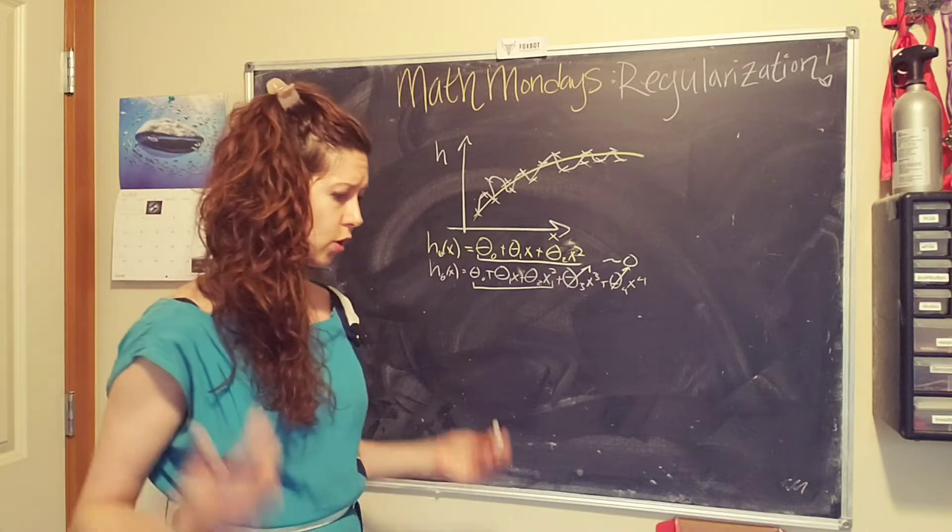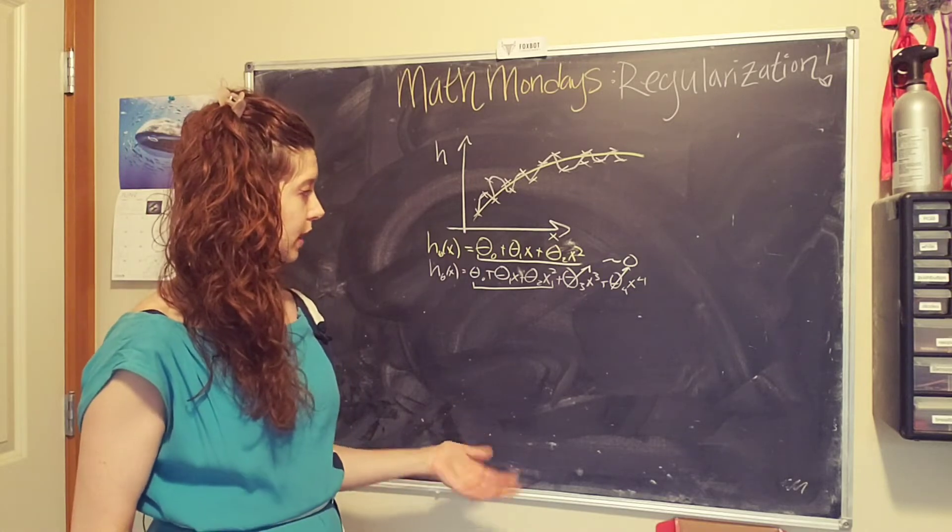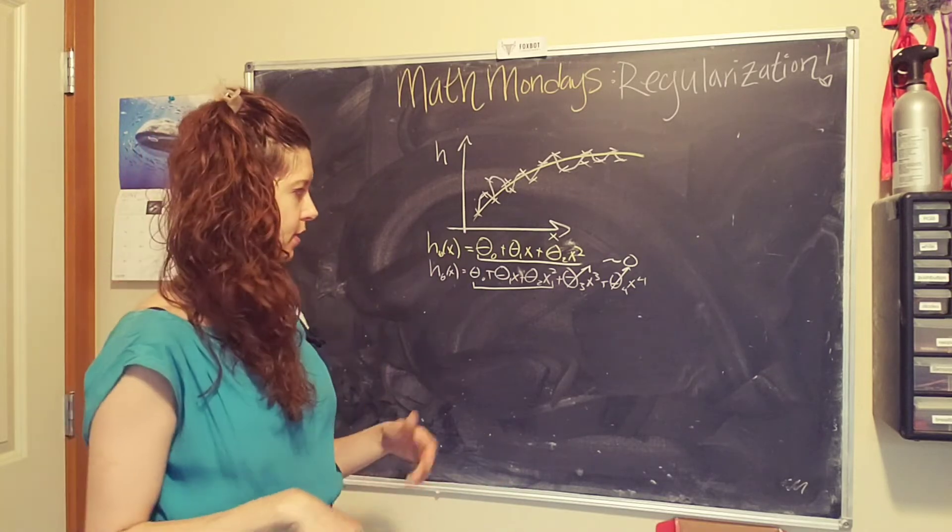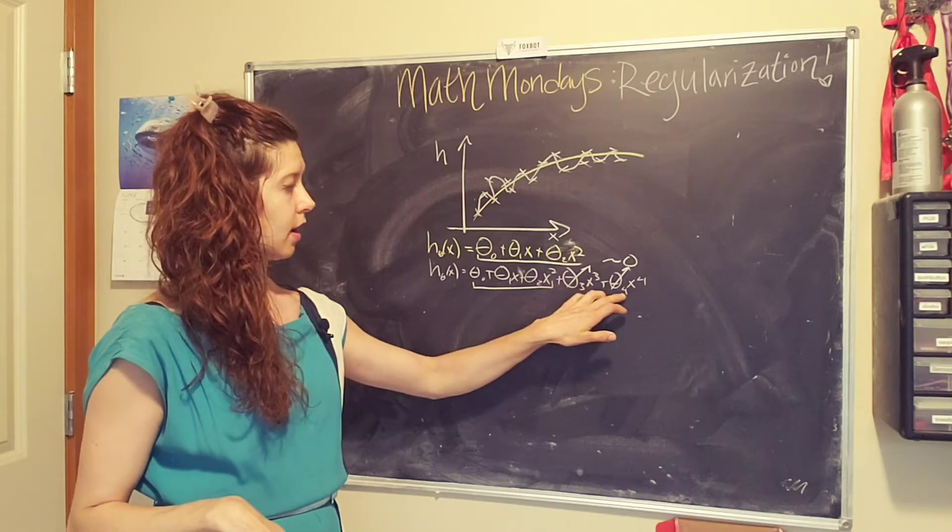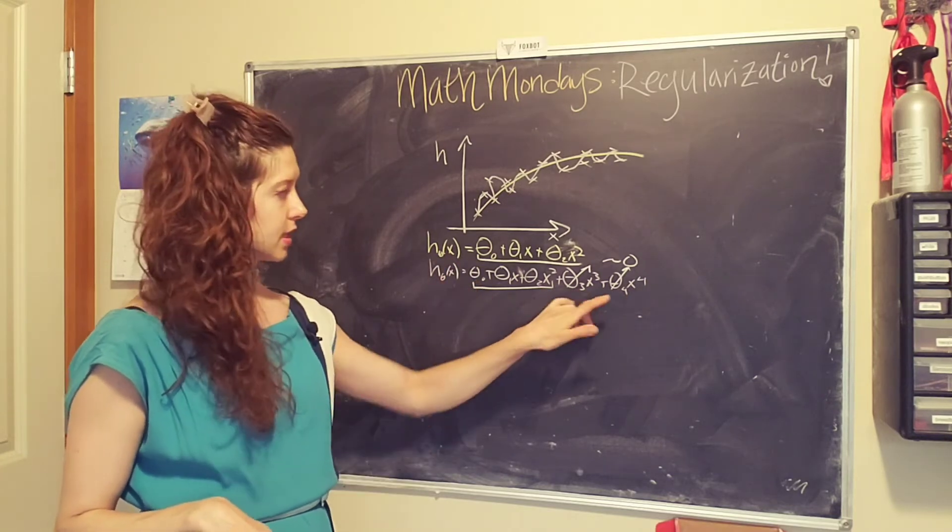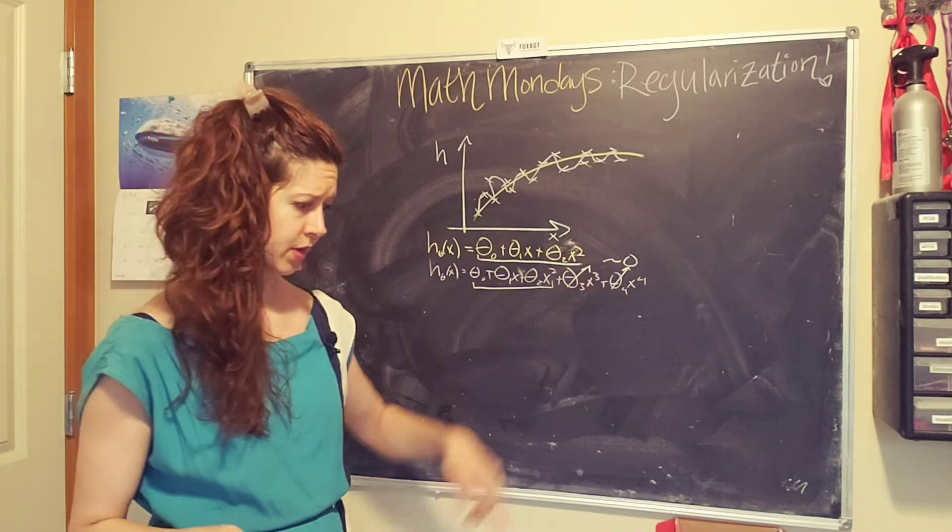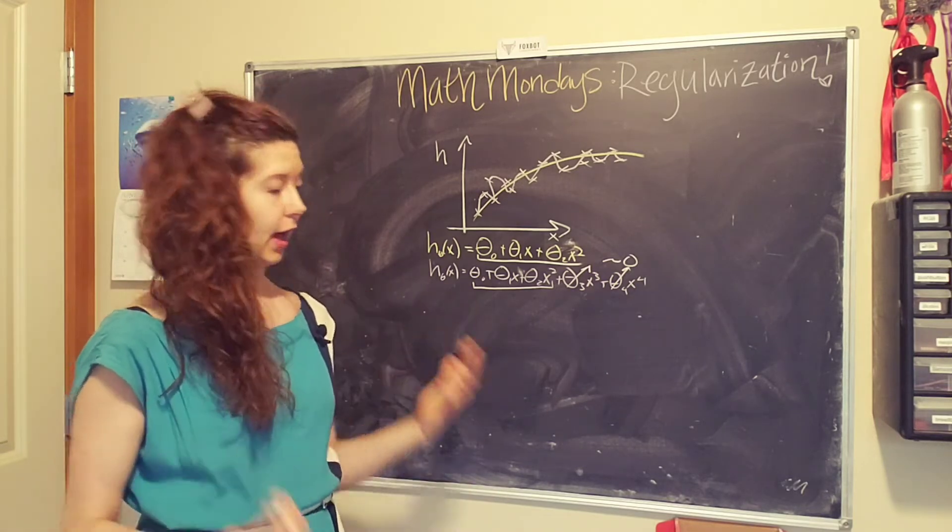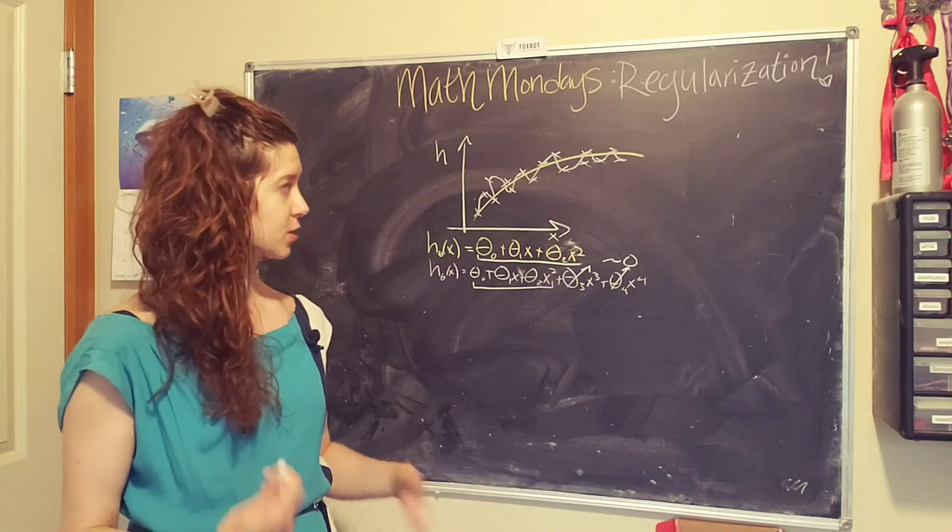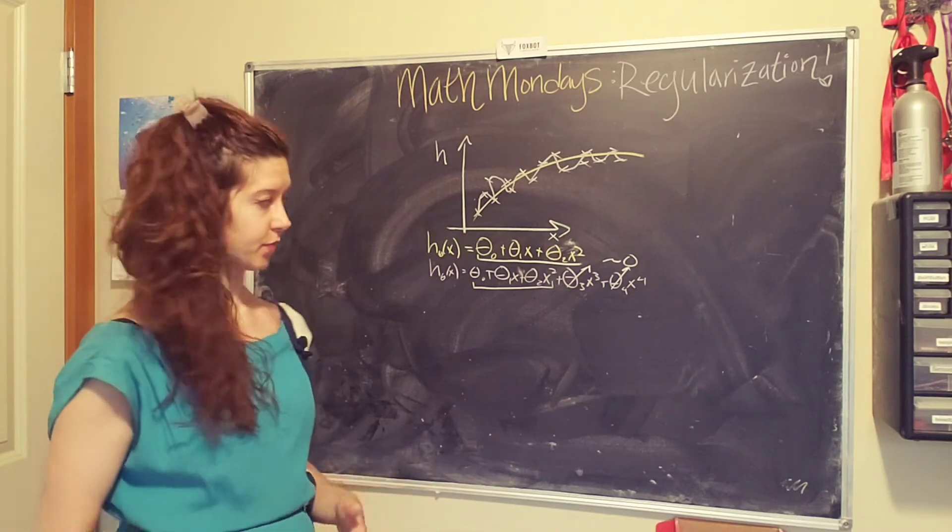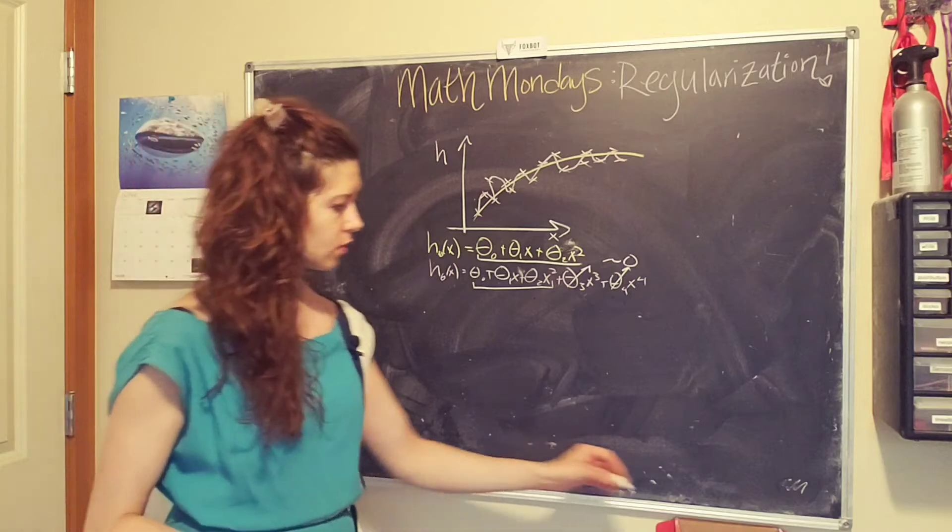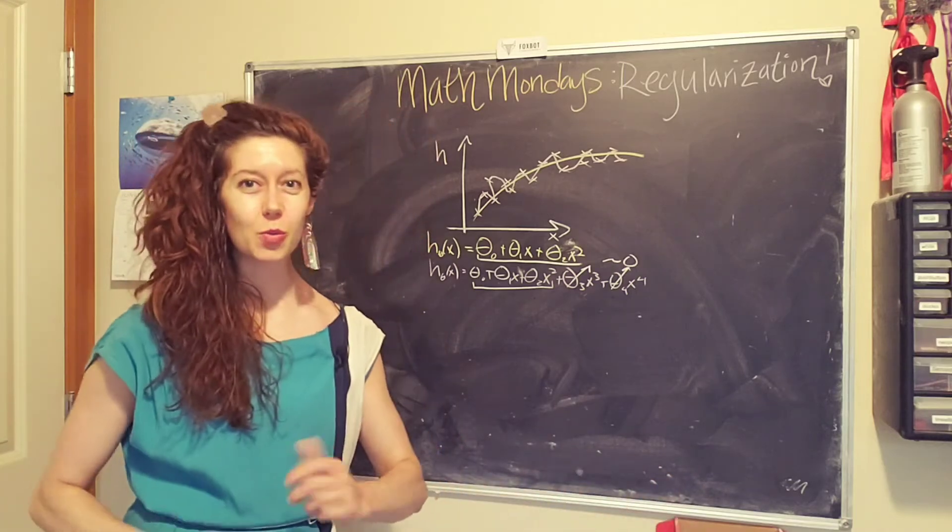This is what we want and this is what we can use regularization to help us with. So the goal is to get to a simpler hypothesis by basically reducing the size or shrinking the size of these parameters. This will help us deal with overfitting for our machine learning model.